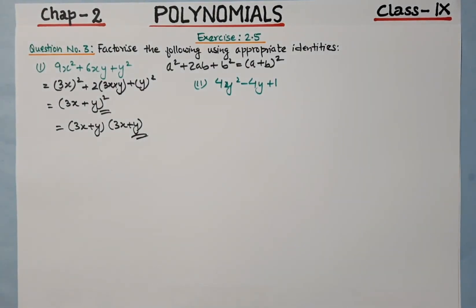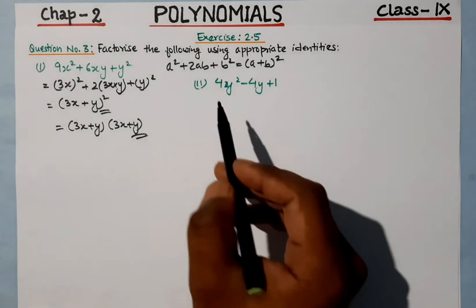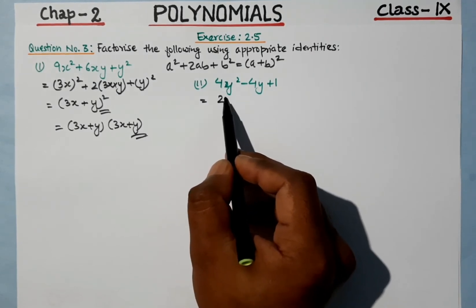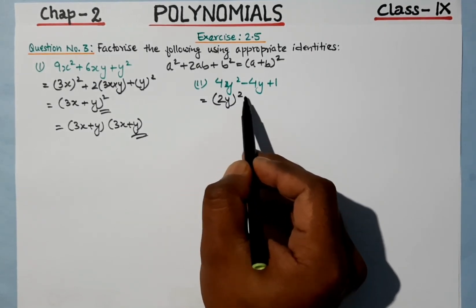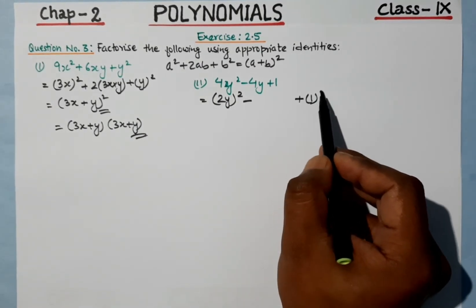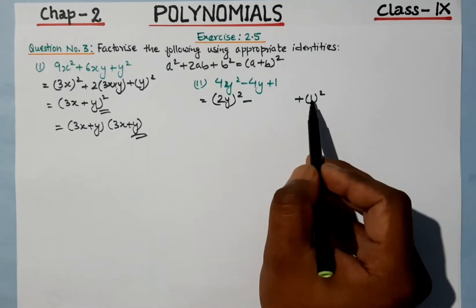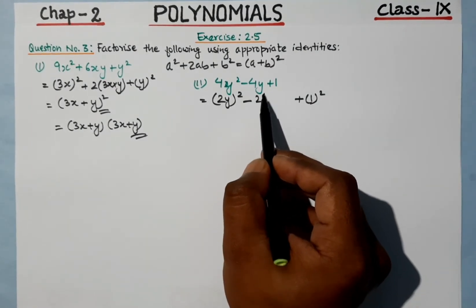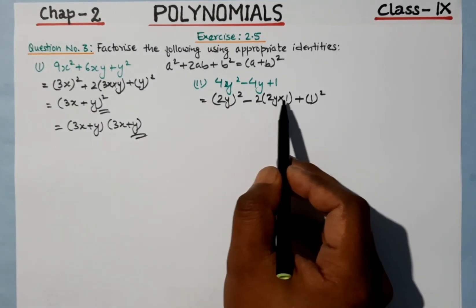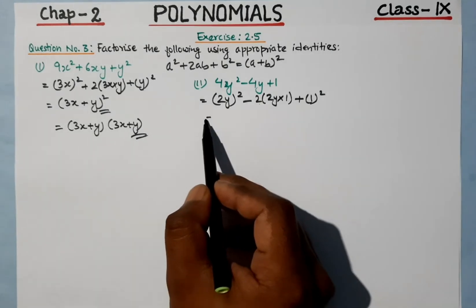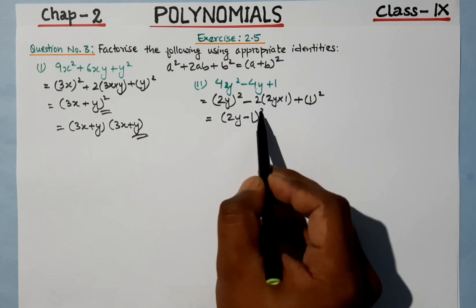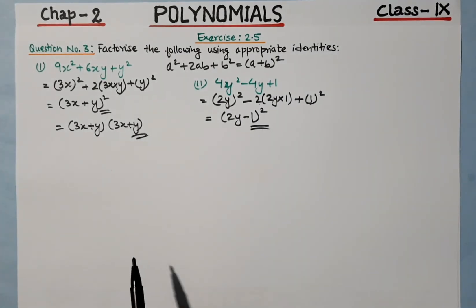We can use the same identity here, but this time it has a minus sign. The first term 4y² we write as (2y)², and the last term 1 we write as 1². The middle term 2 into a into b is 2 times 2y times 1. So the identity is a² minus 2ab plus b² — that is (a − b) whole squared. Here the answer is (2y − 1) whole squared.